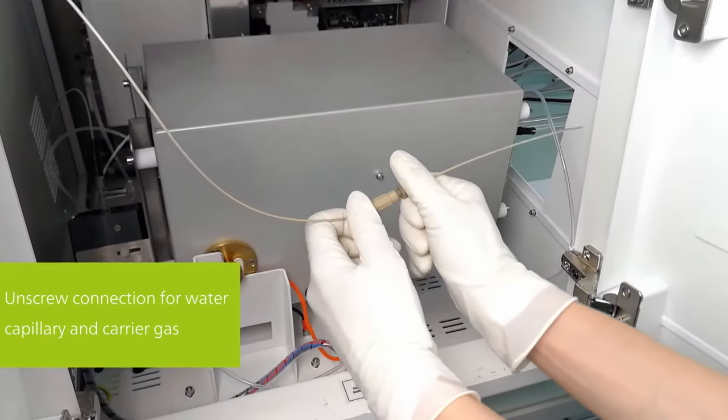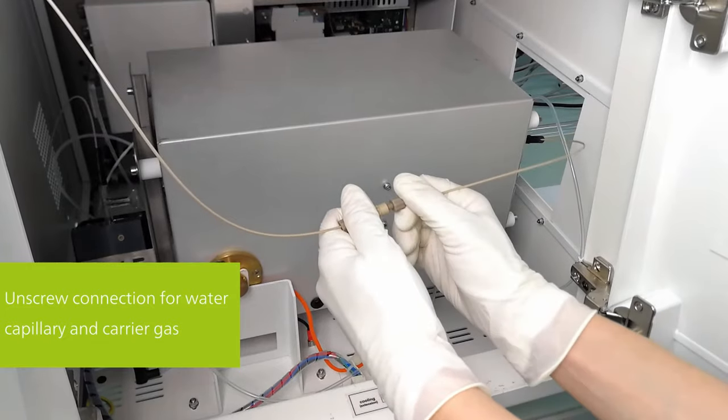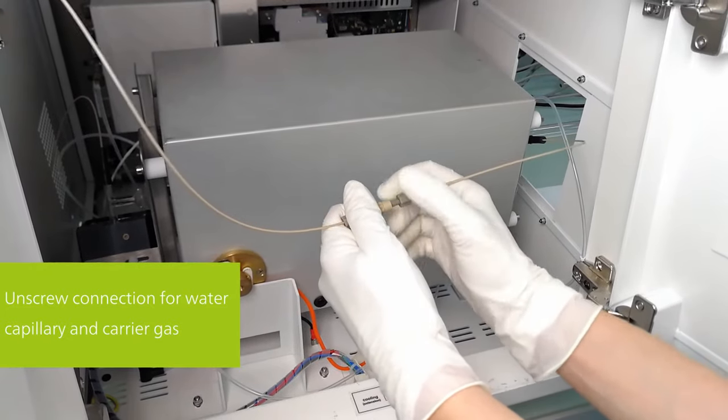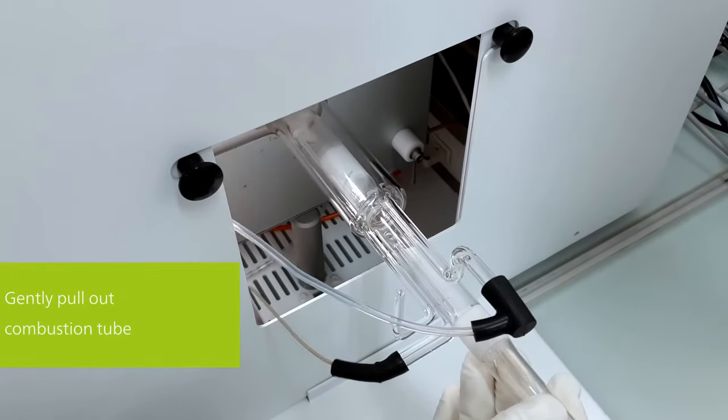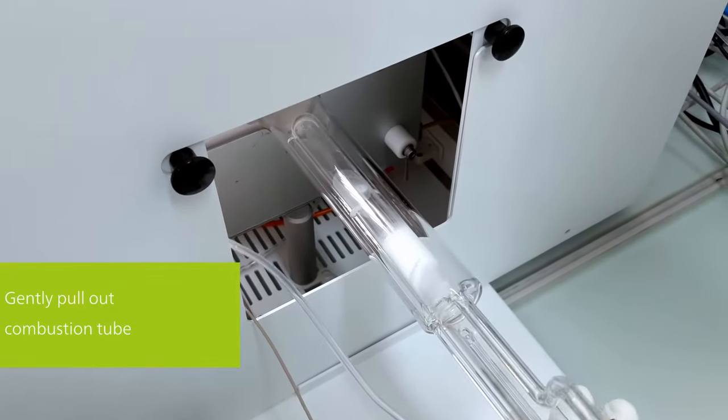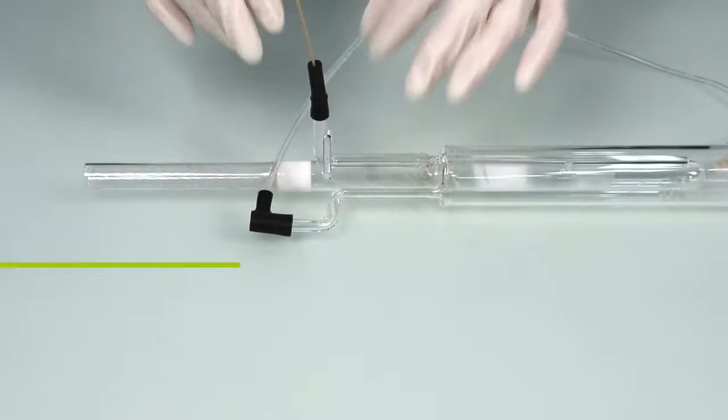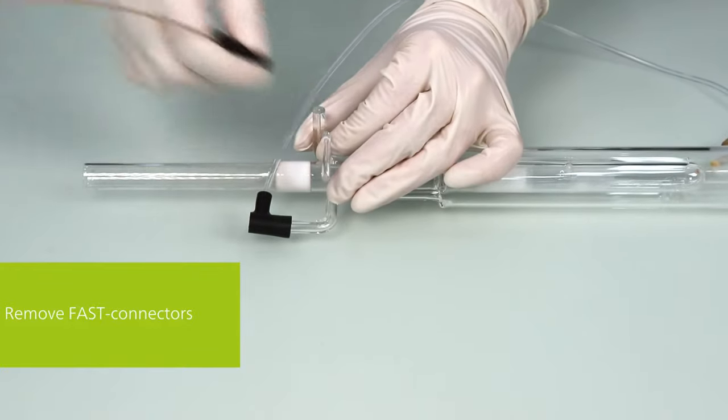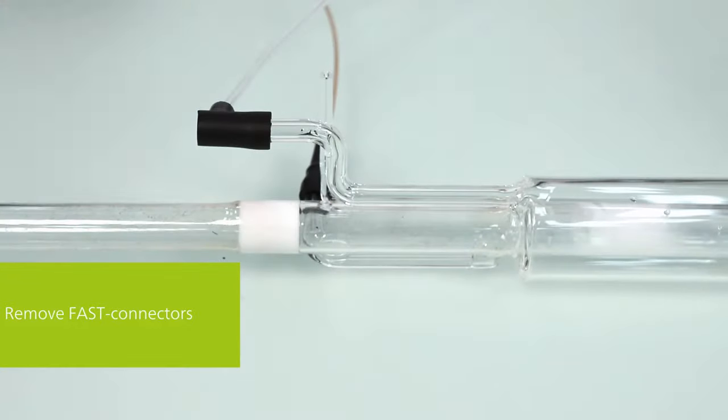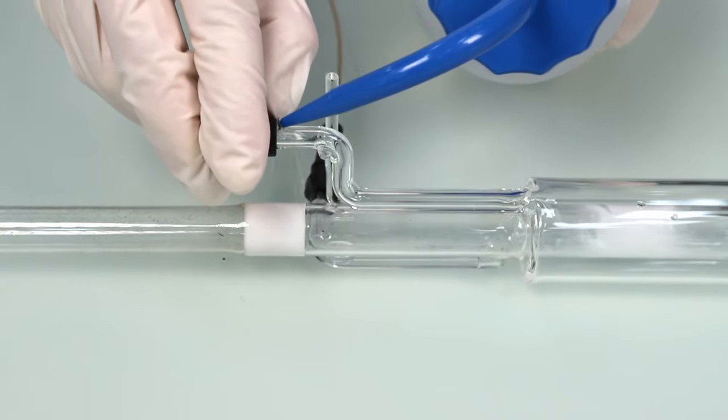In order to minimize the risk of breaking off the quartz connections, we recommend using couplings at the oxygen tube as well as at the water inlet capillary. This way, you can easily remove the combustion tube completely from the oven before you even have to manipulate the fast connectors. Now you can remove the fast connectors outside the oven without any space constraints. If you have trouble removing your fast connectors, you can use some water to help with the removal.